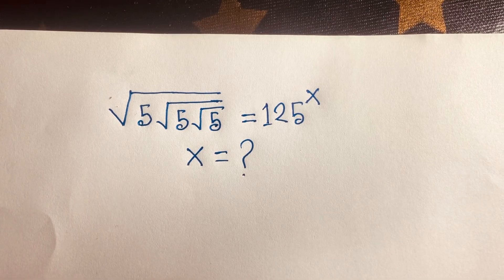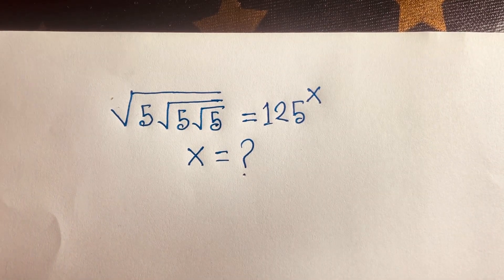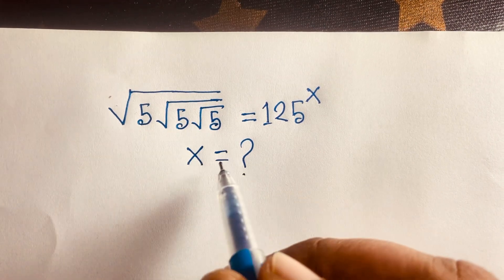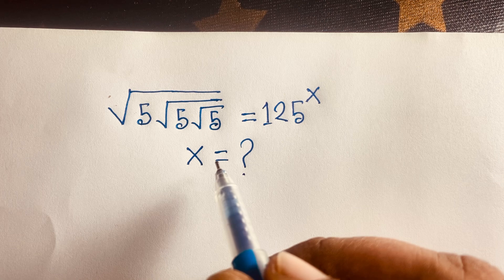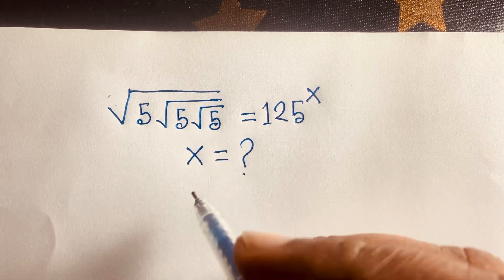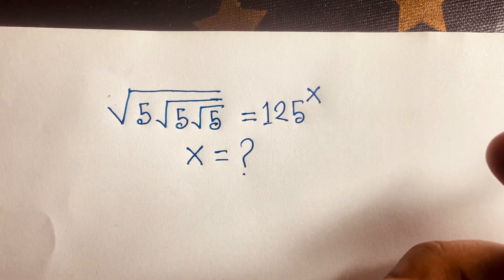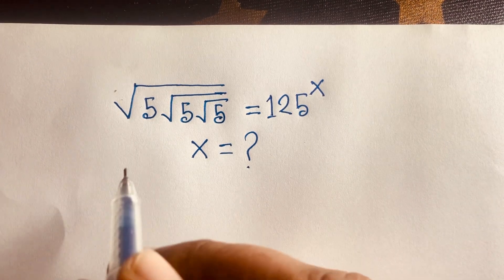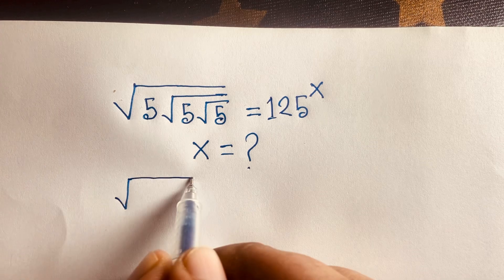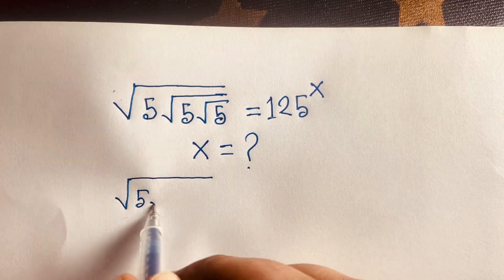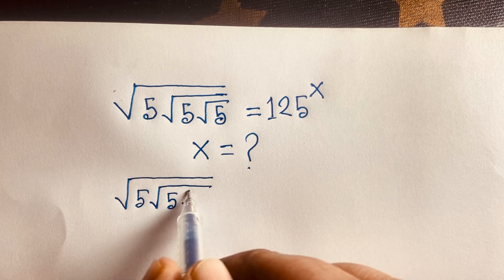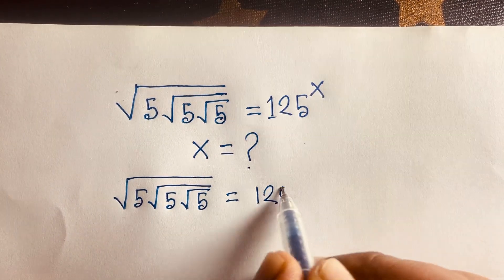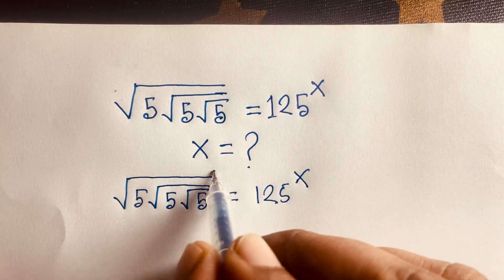Hello everyone. In this video we have solved this interesting math question: square root of square root of square root of 5 is equal to 125 to the power x, and we find out what is the value of x in this square root problem.